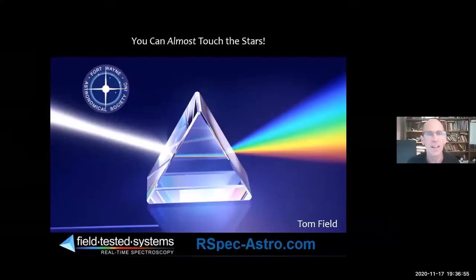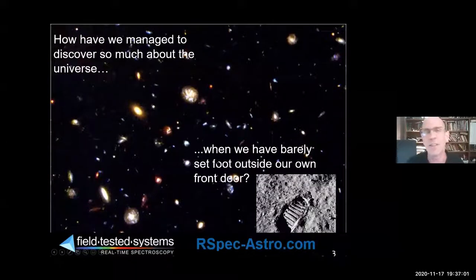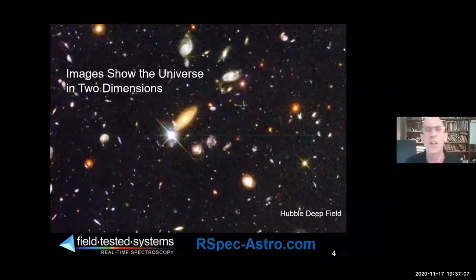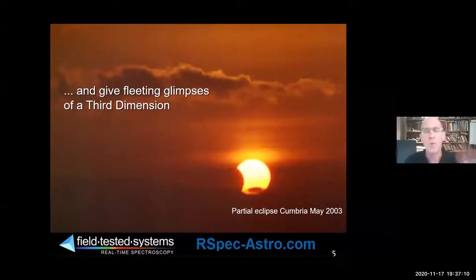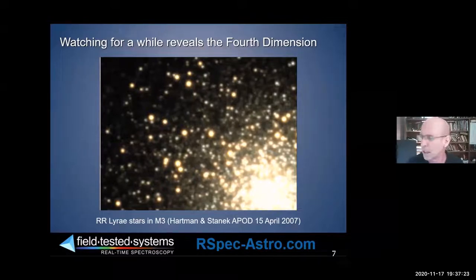I'll tell you a little bit more about my background as I get into the presentation. So how have we managed to discover so much about the universe when really we haven't even left home? We're still in such a localized region. Images for more than a century have given us two-dimensional views, and with eclipses we can get a sense of depth. And then with a little bit of time involved, we can see things changing.